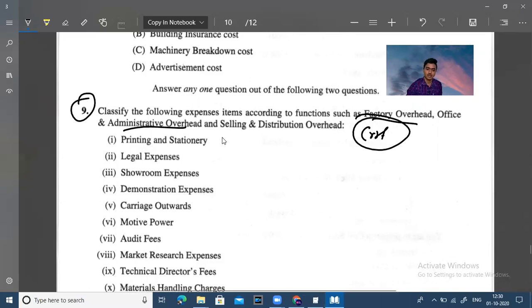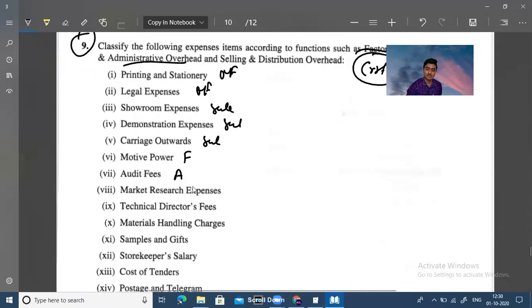You can classify these according to different standards - the operational unit, sales, demonstration, marketing process. Sales related items, market research expenses.